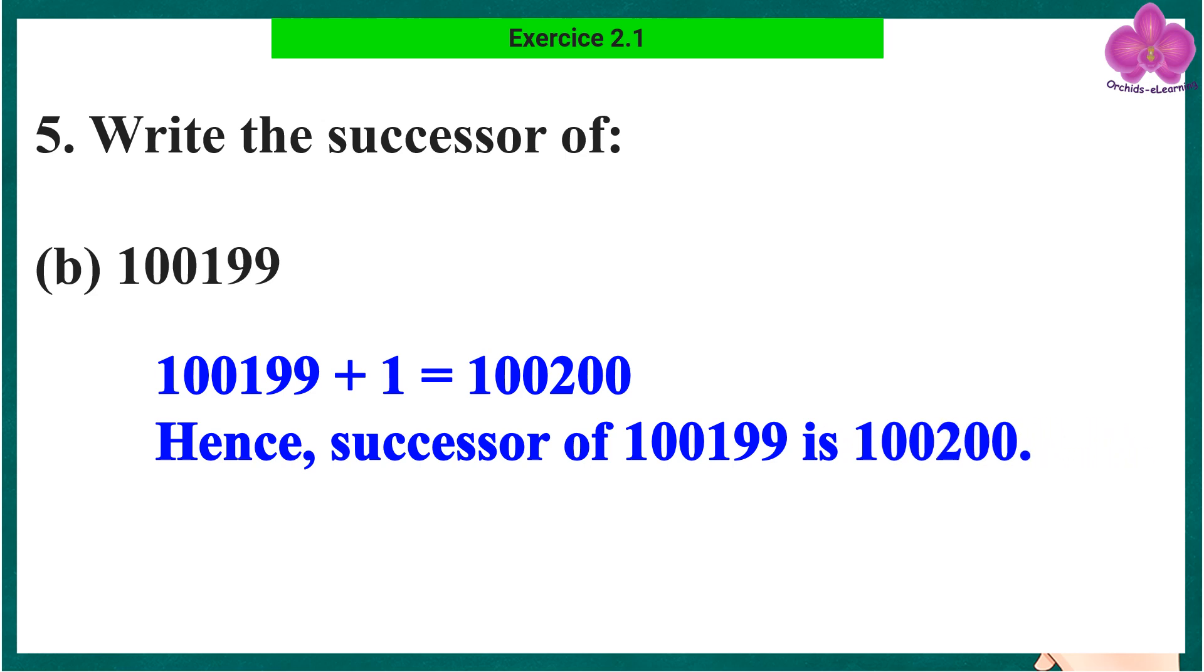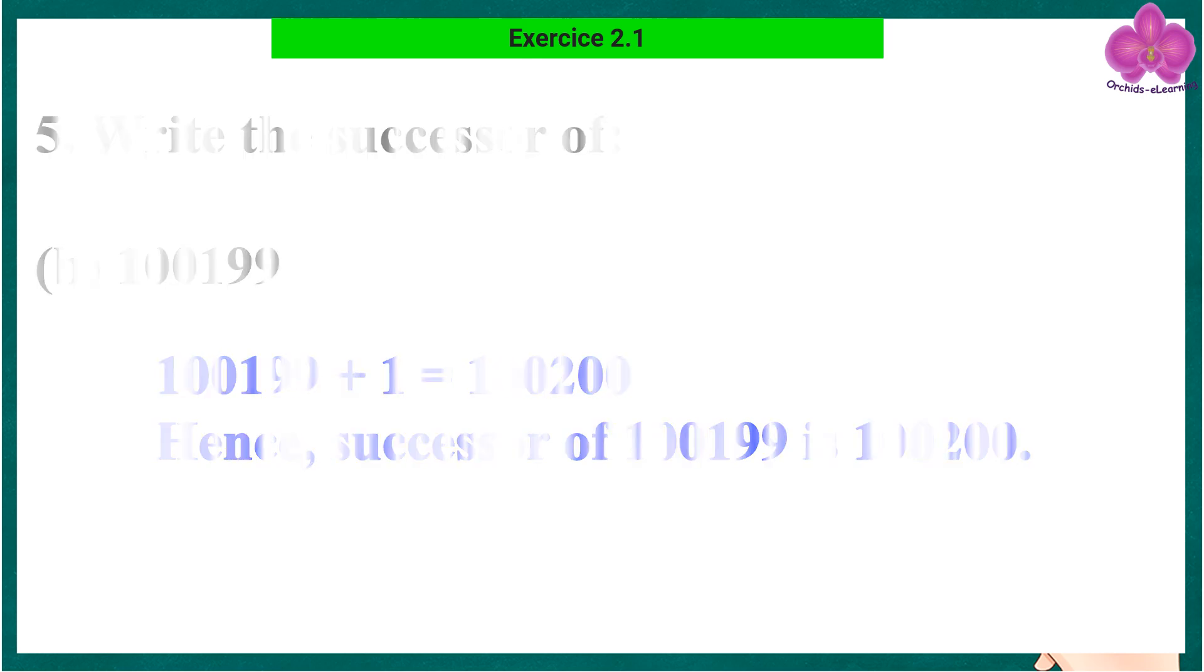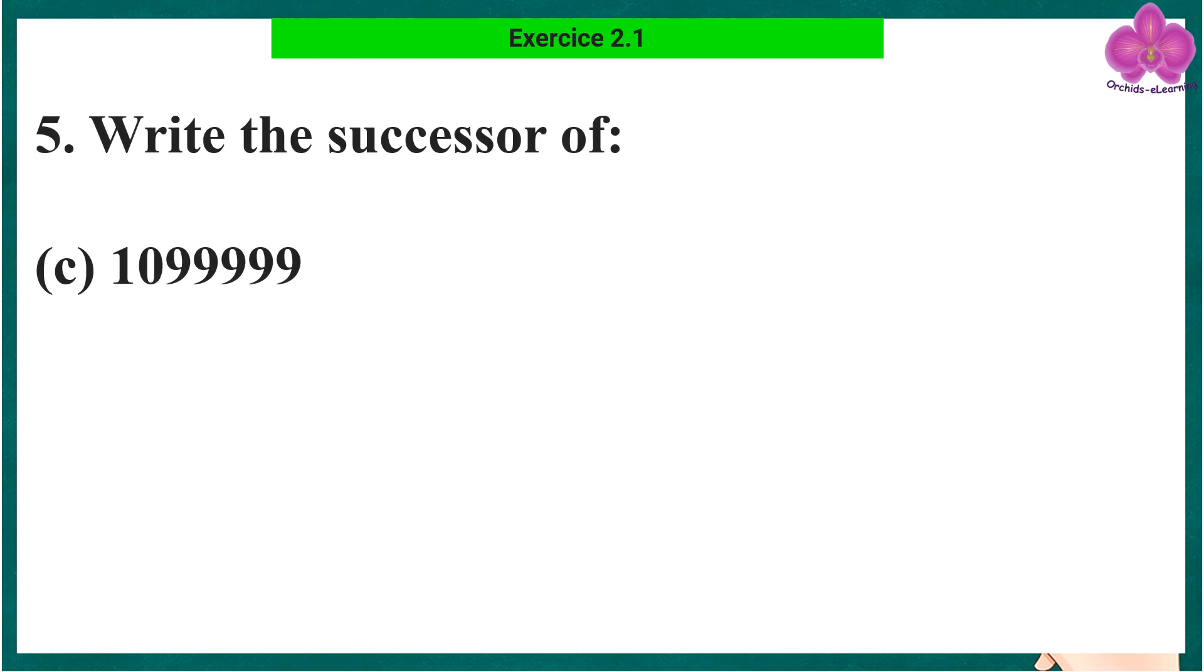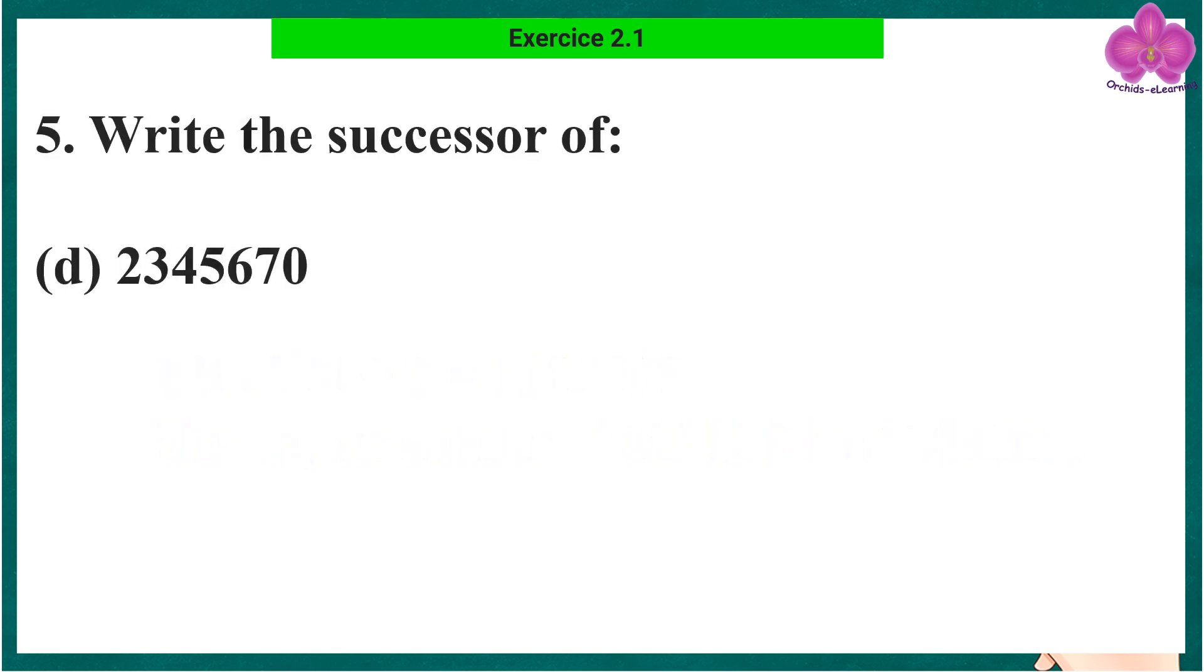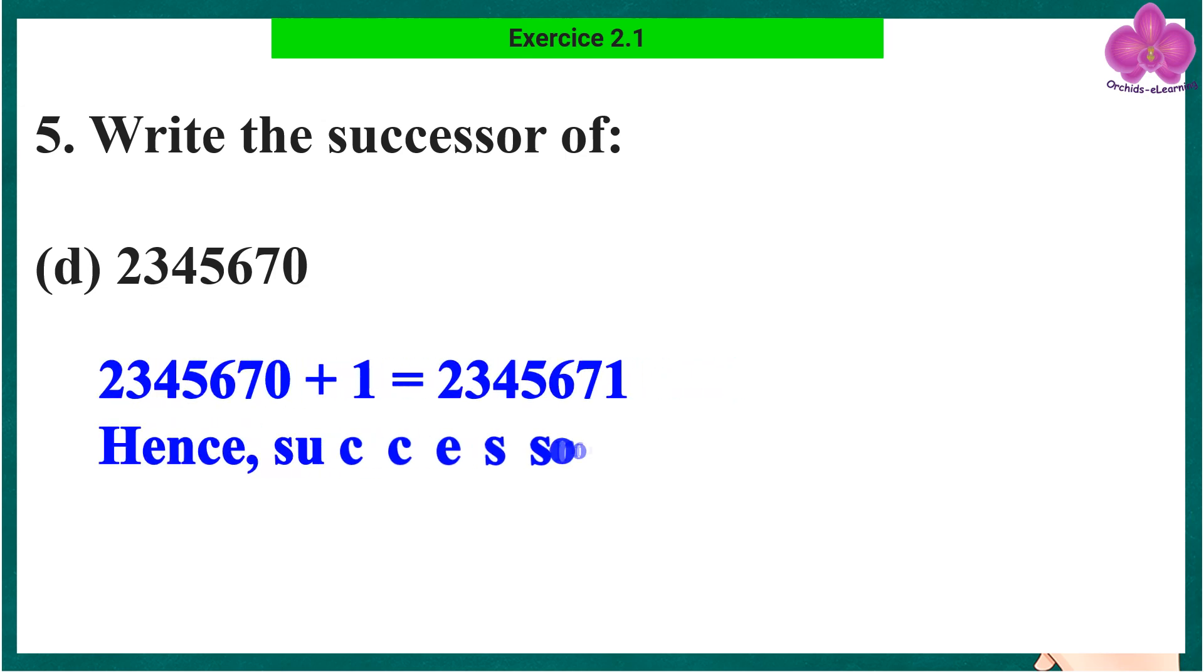Part c: 10,99,999. Hence, successor of 10,99,999 is 11 lakhs. Part d: 23,45,670. 23,45,670 plus 1 equals